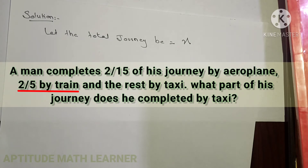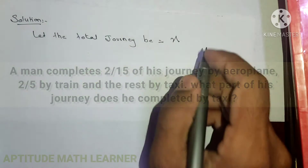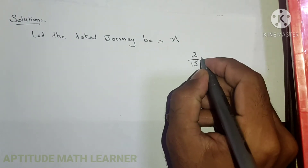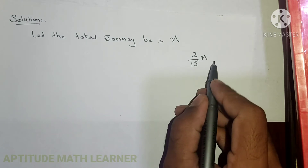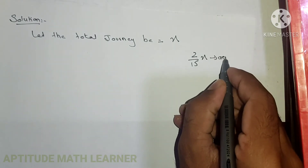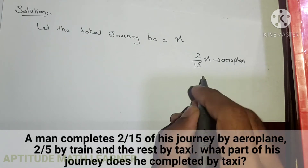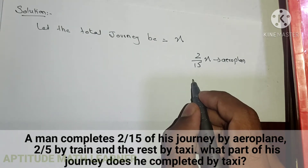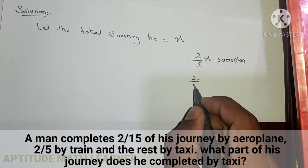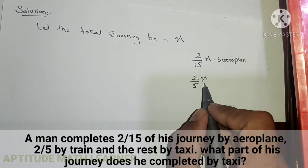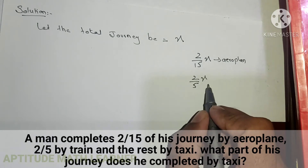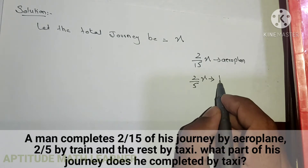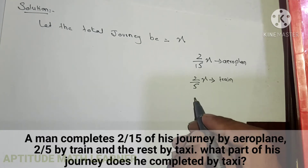So 2/15th of the total journey is by aeroplane, and 2/5 of the total journey is by train. X is the total journey — this is the part by aeroplane and this is the part by train. Now what we have to find is the part covered by taxi.